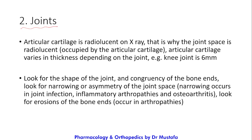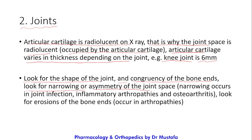After assessing the bones, assess the joints. Articular cartilage is radiolucent on X-ray, which is why the joint space appears black — it is occupied by radiolucent articular cartilage, not empty. Cartilage thickness varies by joint; for example, the knee joint space is about 6 mm. Look at the shape and congruency of the bone ends, and check for narrowing or asymmetry, which occurs in joint infection, inflammatory arthropathy, and osteoarthritis. Also look for erosions of the bone ends.